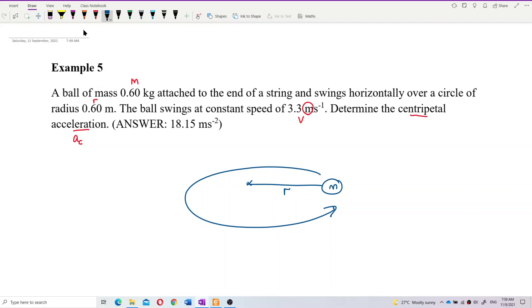So the centripetal acceleration - this is the center of the circle. The centripetal acceleration should be directed to the center of the circle. So we are going to find this centripetal acceleration. How are you going to find it?